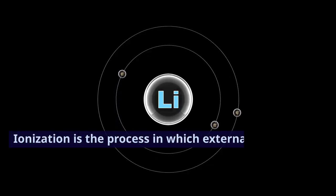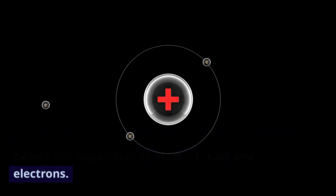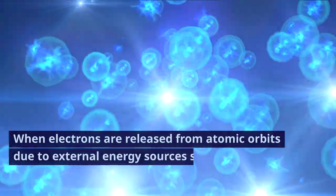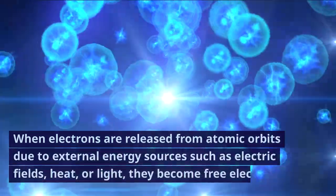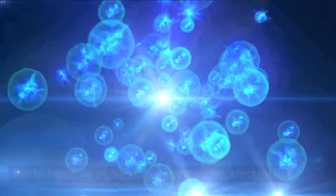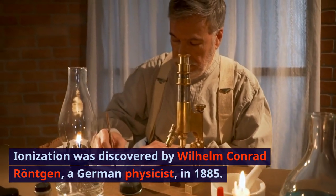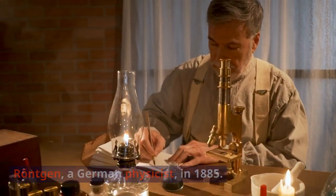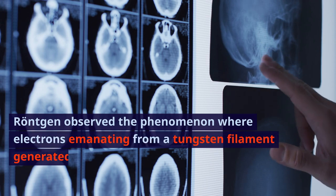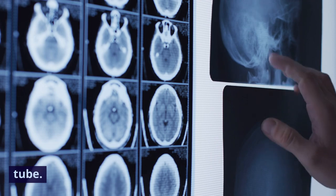Ionization is the process in which external energy causes the separation of atomic nuclei and electrons. When electrons are released from atomic orbits due to external energy sources such as electric fields, heat, or light, they become free electrons. Ionization was discovered by Wilhelm Konrad Röntgen, a German physicist, in 1885. Röntgen observed the phenomenon where electrons emanating from a tungsten filament generated X-rays as they passed through a glass tube.